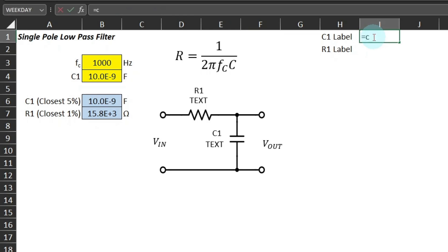For the C1 label, we will use the cap prefix function with the value of C1 as its argument, with no additional arguments.